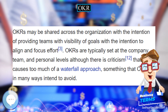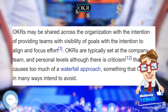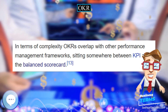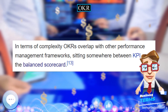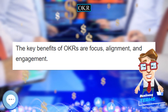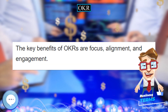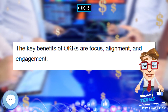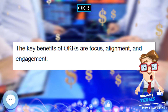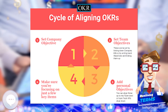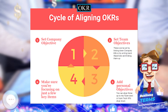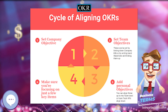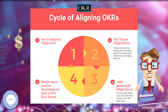OKRs comprise an objective — a clearly defined goal — and 3 to 5 key results, which are specific measures used to track the achievement of that goal. The goal of OKR is to define how to achieve objectives through concrete, specific, and measurable actions.